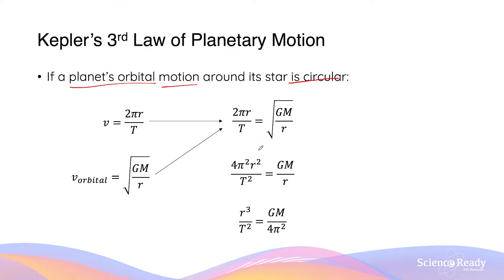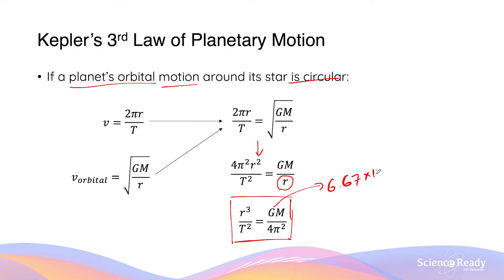By squaring both sides, multiplying the radius on both sides, and dividing by 4π² on both sides, we arrive at the expression: r cubed divided by T squared equals GM over 4π². This is a common expression for Kepler's third law. This is a constant value because G is the universal gravitational constant, M is the mass of the central star which stays the same, and 4π² is also constant. So the proportionality constant K in Kepler's third law is actually equal to GM over 4π².